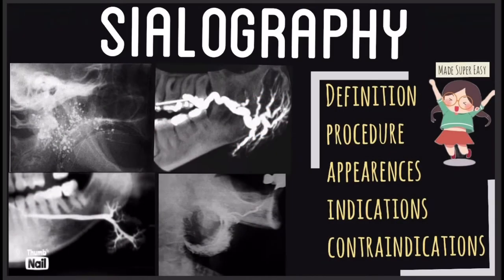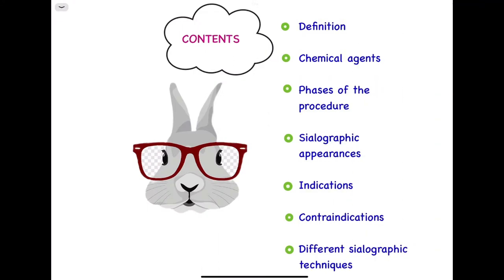Hello guys, welcome back to A to Z Dentistry. Today we will be studying about sialography, which is a method for analyzing the structure of salivary glands in detail. We will cover the following subheads: definition, chemical agents, phases of the procedure, sialographic appearances, indications, contraindications, and different sialographic techniques.